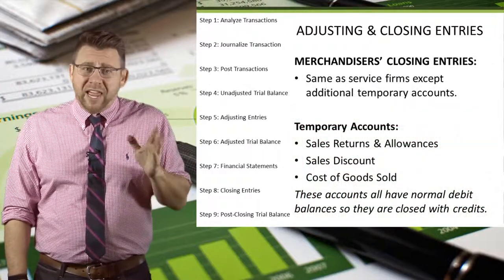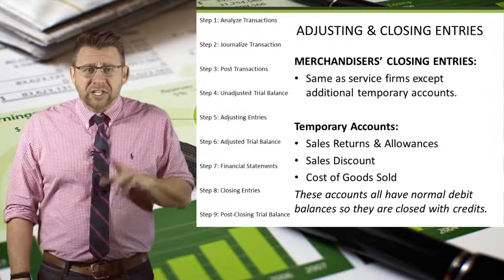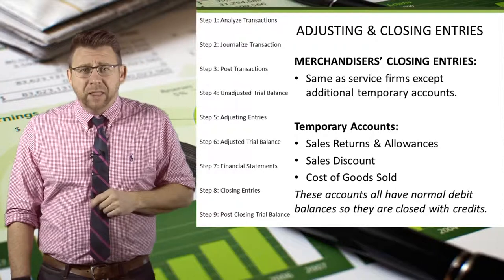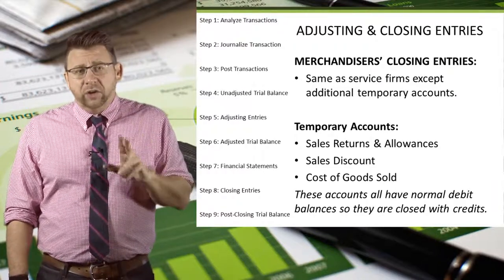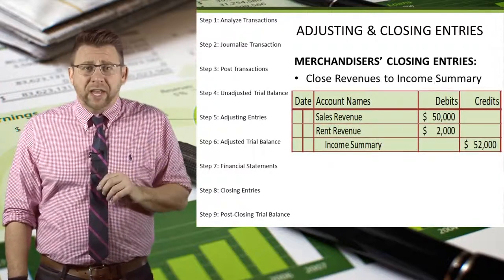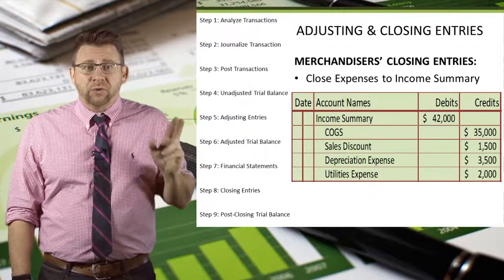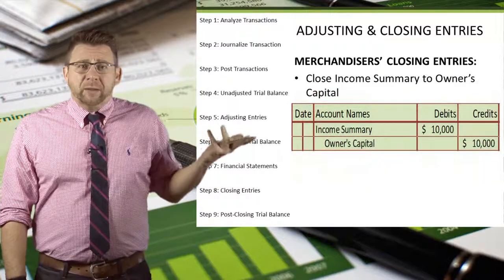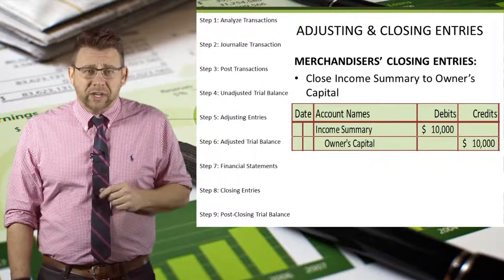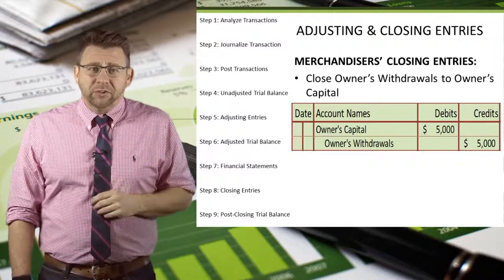The closing entries for merchandisers are the same as those for service firms, except that we have some new temporary accounts that must be included in the closing process. Since sales returns and allowances, sales discounts, and cost of goods sold all have normal debit balances, they get closed with credits and are included in the expenses closing entry. Revenues get closed with debits to the revenue accounts and credits to income summary. Expenses and the contra revenue accounts get closed with credits, and income summary is debited. Income summary has a $10,000 credit balance, so it gets closed with a debit and owner's capital is credited for $10,000. Finally, owner's withdrawals is closed with a credit and a debit to owner's capital.